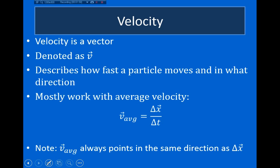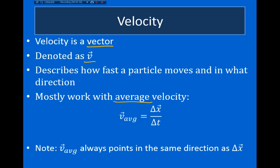Now I want to describe how quickly I've moved in a direction, and for this we use velocity. Velocity is a vector — it has magnitude and direction — denoted with a v with a little arrow above it. Most of the time in this class we'll be talking about average velocity, which is defined as the change in the object's position divided by the change in time — the displacement divided by the time it takes to move through that displacement.